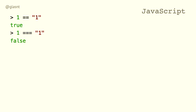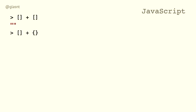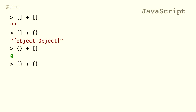Let's talk about JavaScript. In JavaScript, what is the concatenation of two empty lists? It's an empty string. What is the concatenation of an empty list and an empty object? It's the string "object object". What is the concatenation of an empty object and an empty list? It's zero. What is the concatenation of two empty objects? It's not a number. What? What?